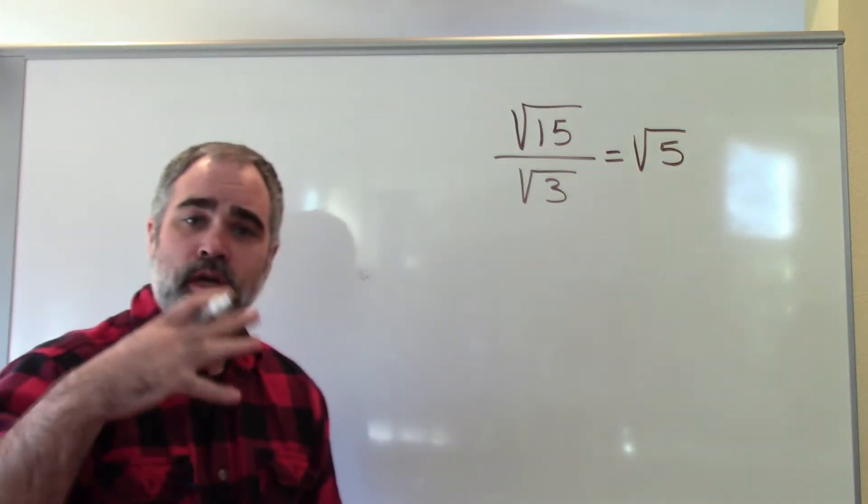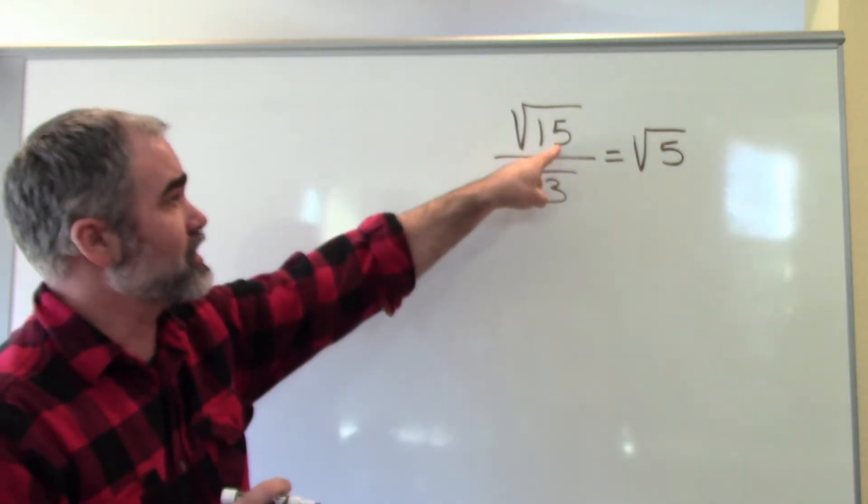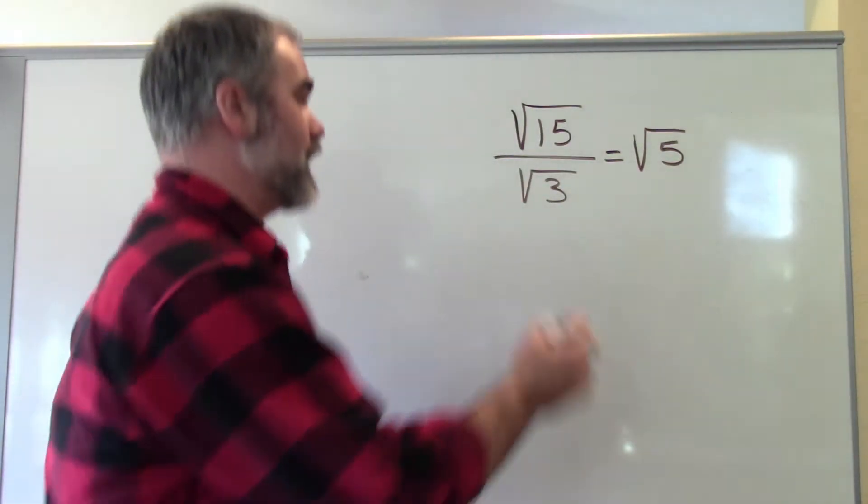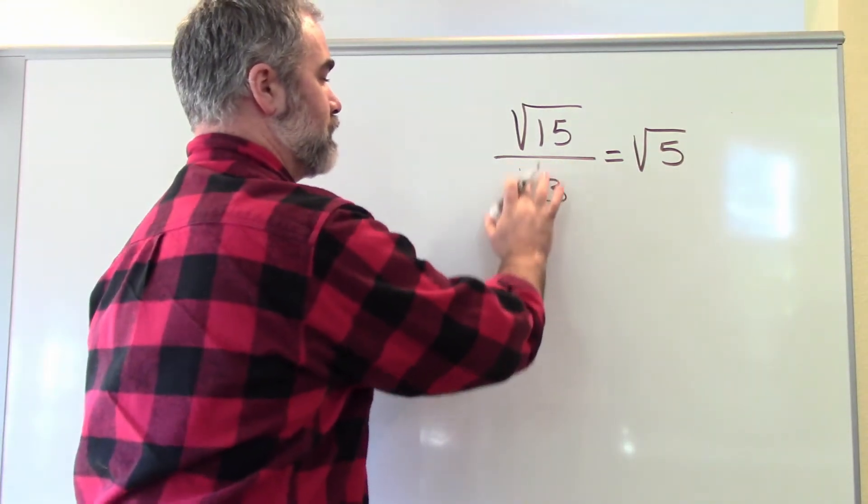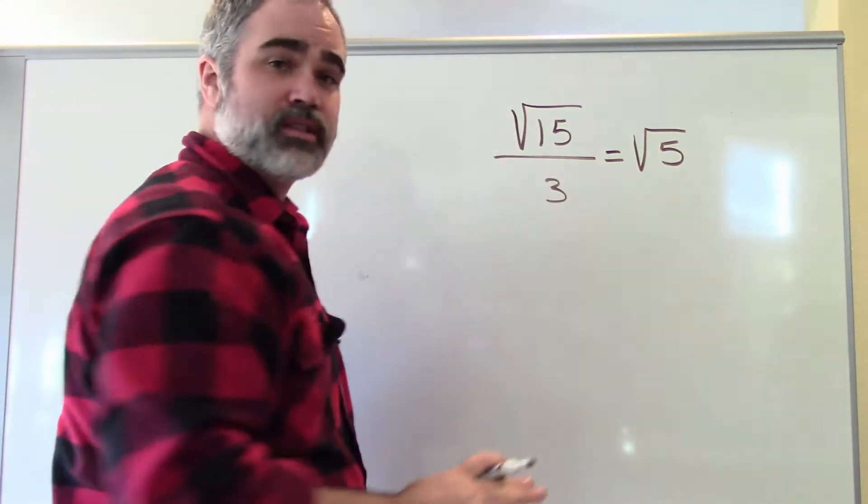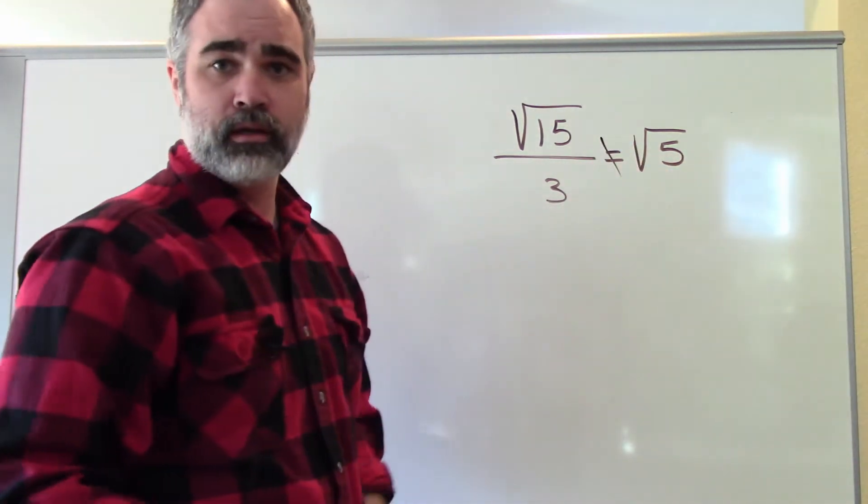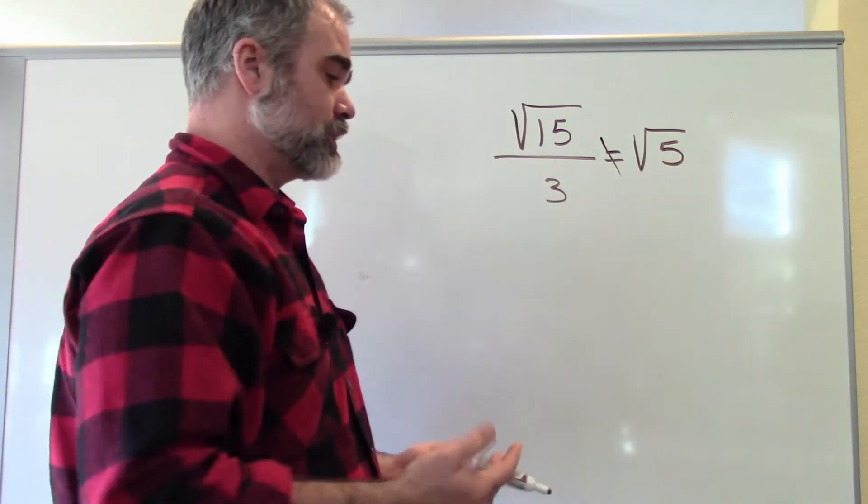And again, you're allowed to multiply or divide the numbers inside the square roots, but you're not allowed to do that if this number is not in the square root. So for example, if this is a 3, that's as simple as I can make it. I can't turn it into square root of 5. But if it is, then I'm good to go.